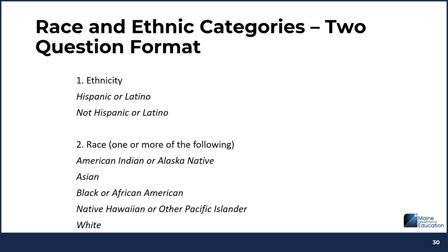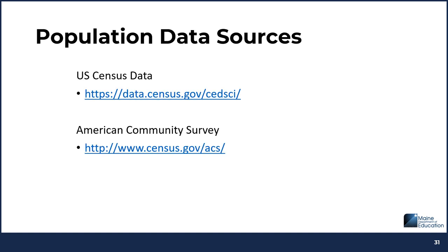The race and ethnic categories come in a two-question format. The first question is ethnicity: Hispanic or Latino, or not Hispanic or Latino. The second question is race, where one or more of the following races can be selected: American Indian or Alaska Native, Asian, Black or African American, Native Hawaiian or other Pacific Islander, or White. Some population data sources that can be used include U.S. Census data and the American Community Survey.